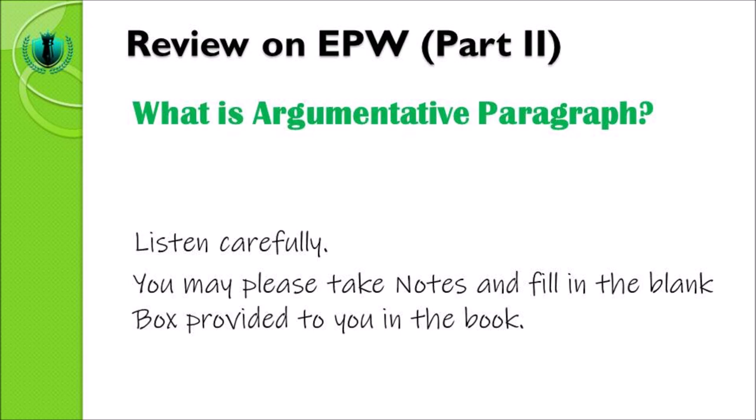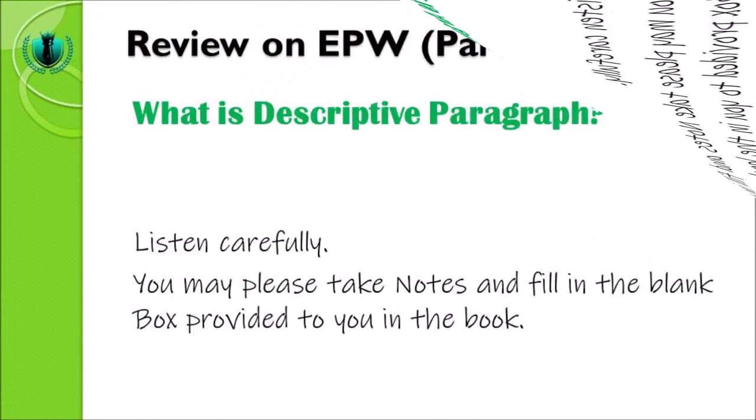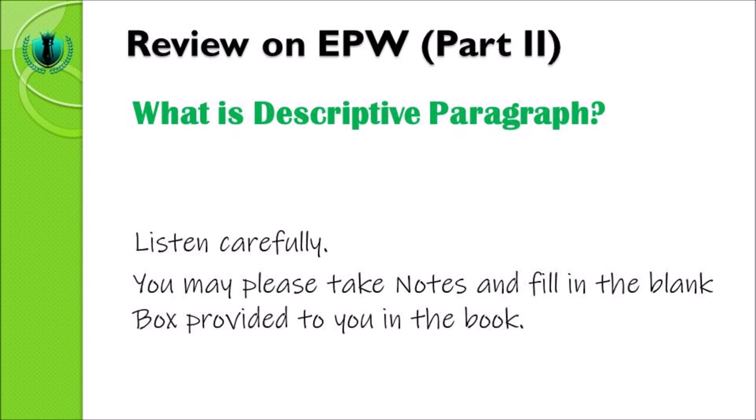Argumentative paragraph also tries to persuade readers about the opinion of the author. When you write about an object, a person, or something that can be described in the form of writing, then such writing is known as a descriptive paragraph or descriptive genre. If the writing is as short as a paragraph, then it is a descriptive paragraph. In other words, descriptive paragraph is a paragraph written with the purpose of describing an object, a person, or one thing that can be observed and perceived through the five senses of human beings.